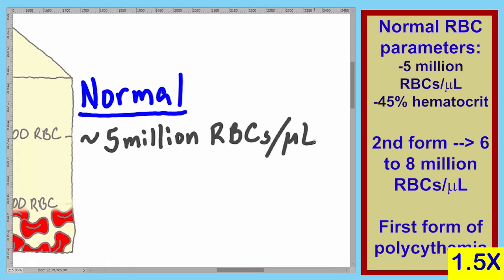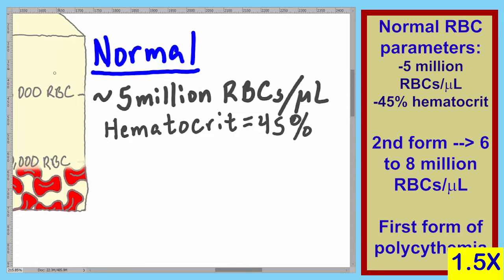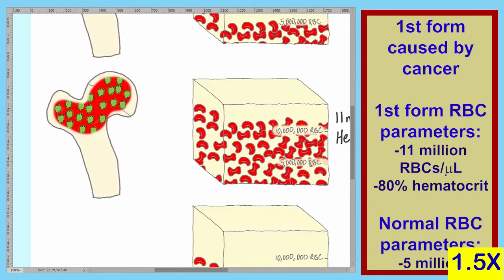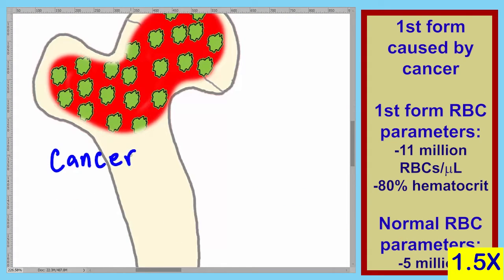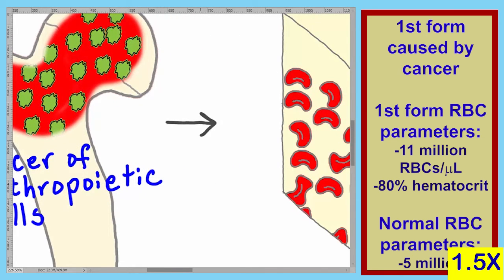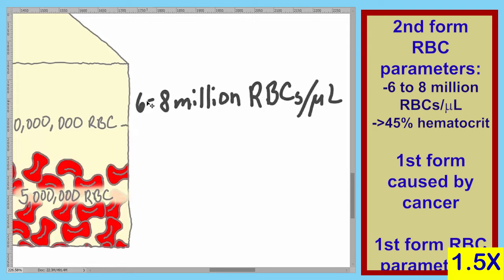In our normal situation, we have approximately 5 million RBCs per microliter, and a normal hematocrit is about 45%. In the first form of polycythemia, the red blood cell count can reach 11 million red blood cells per microliter, and the hematocrit can be as high as 80%. This form is caused by cancer of the erythropoietic cell line. In the second type of polycythemia, the red blood cell count can be between 6 and 8 million per microliter, with a hematocrit between that of normal and the first form.